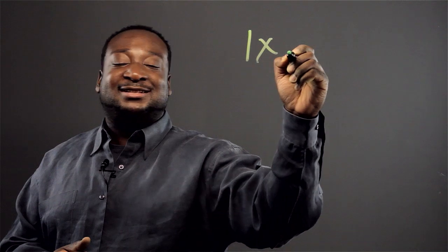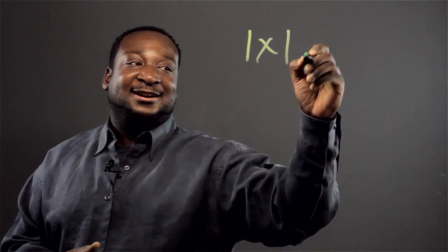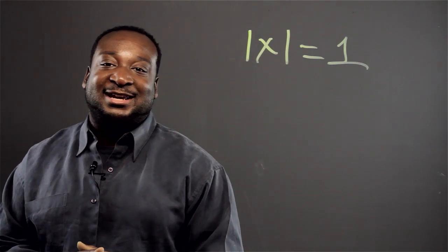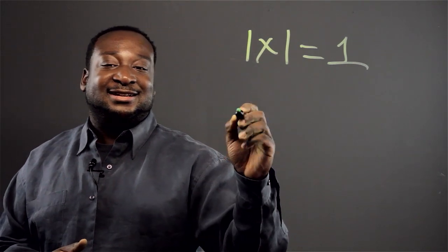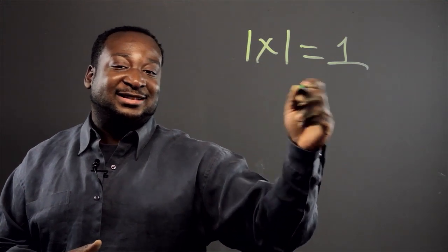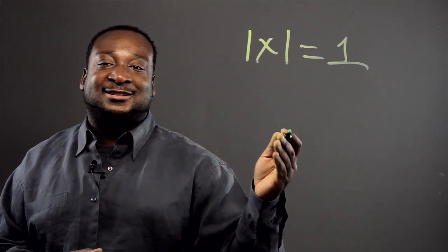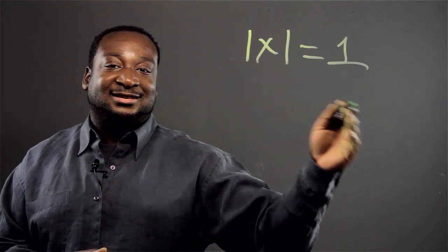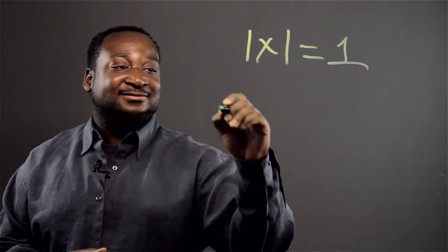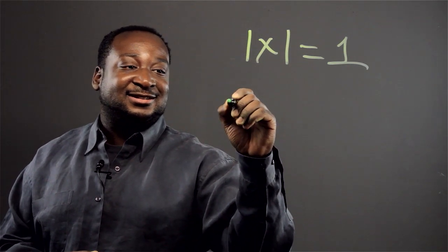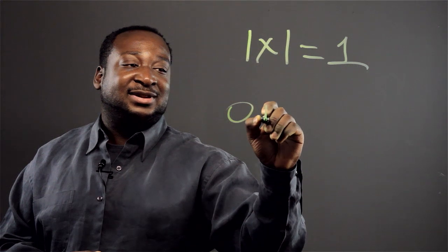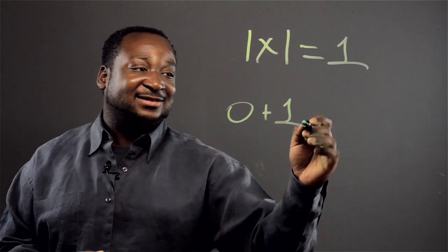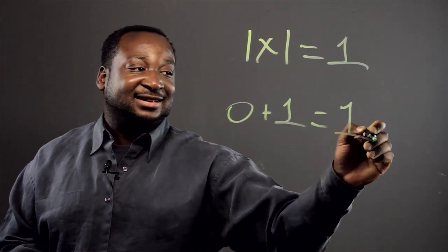So 1 times itself is equivalent to just 1. Because in multiplication, if you have one number multiplied by the second number, it's just the first number added to 0 the second number times. This is just 0 plus 1. How many times? You just add it one time. And the answer is just 1.